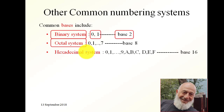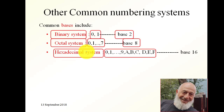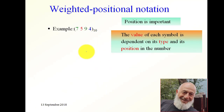We also have the octal system, where the symbols are 0 through 7, so it has a base of 8. We also have the hexadecimal numbering system, which has 16 symbols: 0 through 9, and then A corresponds to decimal 10, B corresponds to decimal 11, C, D, E, and F — where F matches decimal 15 — so it has a base of 16.